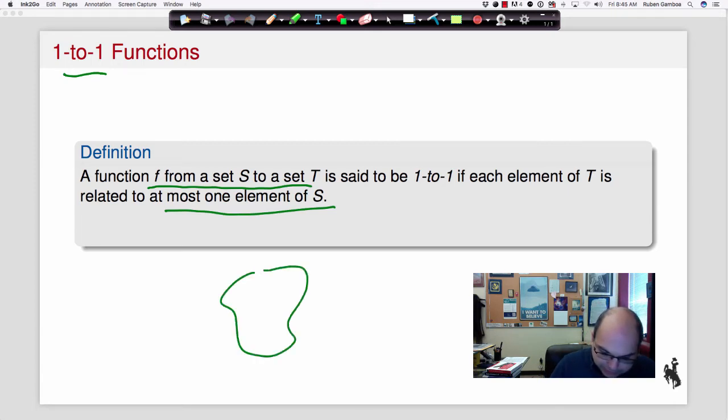So what we have is something like this. We have a set s and we have a set t. And what we want is, this is the way that it should look like if it is a function, right? So that each element of s is associated with at most one element of t. But in this case it's one-to-one. And the reason is that each element of t is associated with at most one element of s.